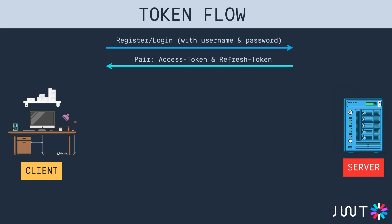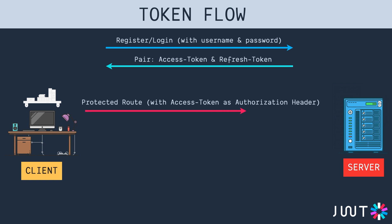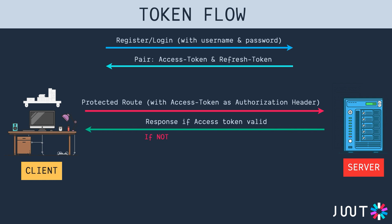We'll come back to why we provide two tokens in the next slide, but for now keep in mind that we send back both an access token and a refresh token. To access any protected route, the client sends his access token as the authorization header. The server verifies whether that access token is valid and sends back the response. If the token is not valid, the server sends back a 401 response indicating the JWT is expired.